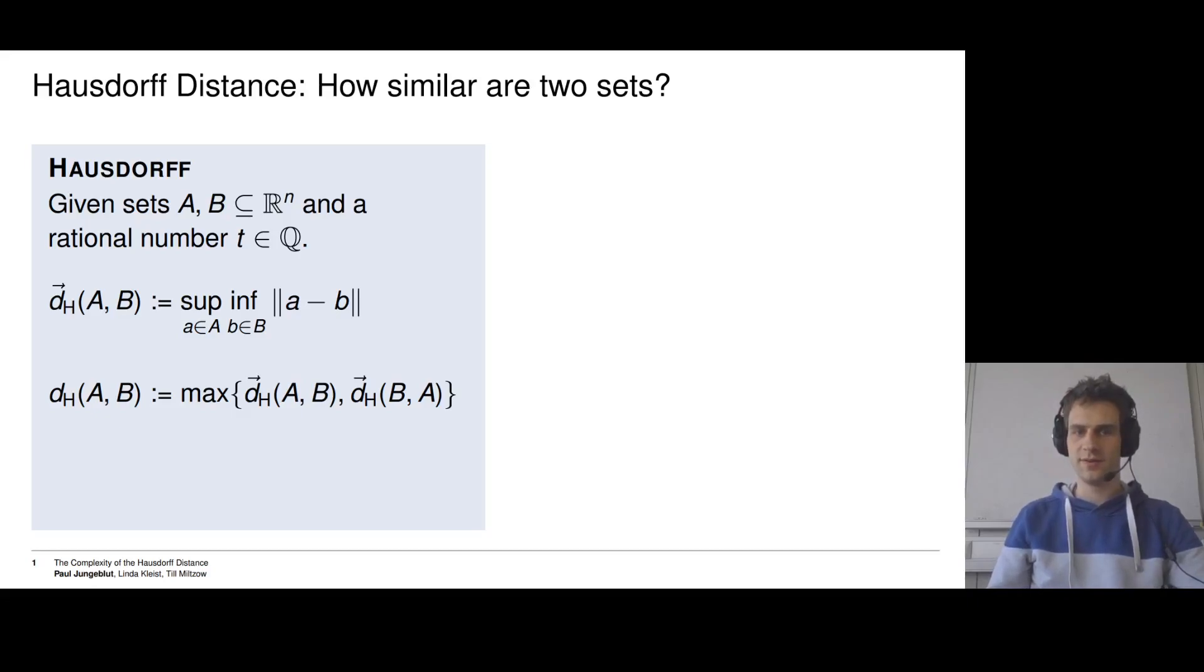We always denote these two sets by A and B, and they will be subsets of ℝⁿ. We will also be given a rational number t for the decision problem. So first of all, the definition of the Hausdorff distance. It looks pretty complicated but we will get an intuition for it. There are two variants, the directed one and the undirected one. We will first look at the directed one, which we denote by this little arrow on top of it.